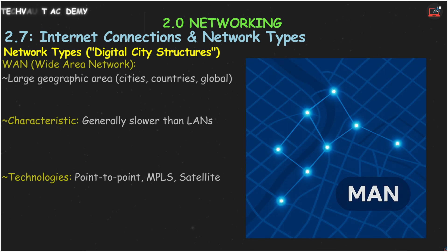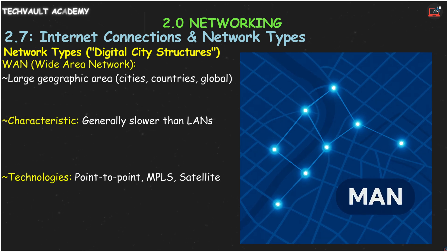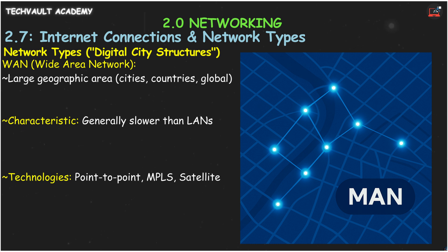A MAN, Metropolitan Area Network, covers a city-sized area, sitting between a LAN and a WAN. Governments or large organizations might use MANs to connect various locations within the same city, often using their own fiber — sometimes called Metro Ethernet.